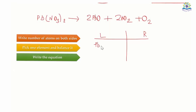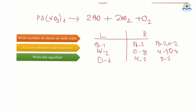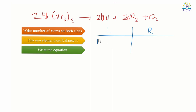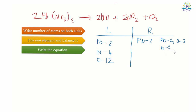Now back to step 1. The number of atoms of lead on the left side is one and on the right side is two. In order to balance it, I will multiply 2 on the left side. If I add 2 to the compound, the number of atoms of all the elements will change. So the number of atoms of lead becomes two, nitrogen becomes two times two — four, oxygen becomes six times two — twelve. And on the right side, the number of atoms of lead is two, nitrogen is two, and oxygen is eight.